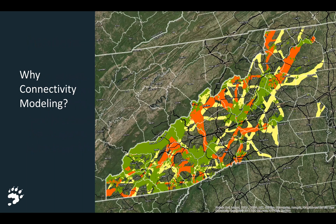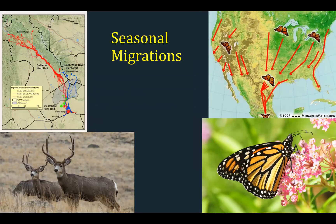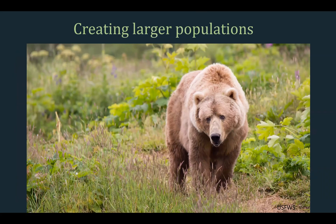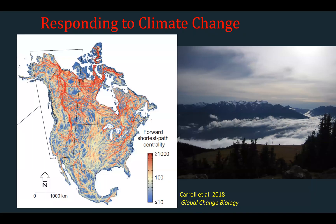Now, why connectivity modeling? Conservationists are now placing great emphasis on designing and implementing networks of habitat. Species need to move in order to survive for a number of reasons: they need to migrate seasonally, achieve genetic interchange to avoid inbreeding, form larger populations that are less prone to extinction, and migrate in response to climate change.